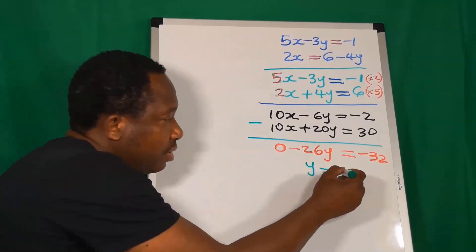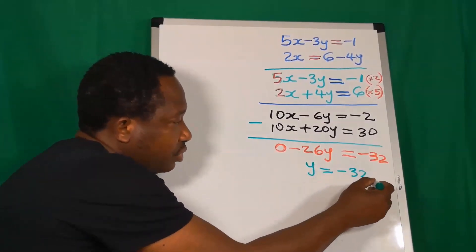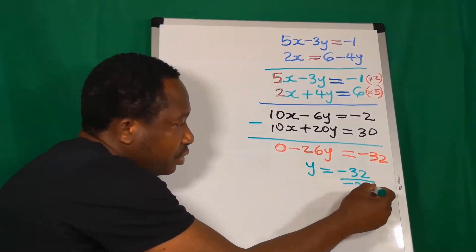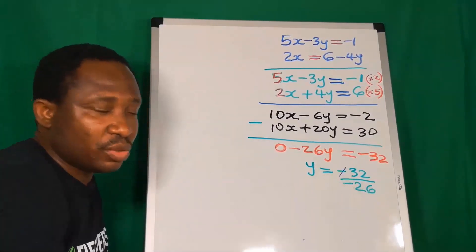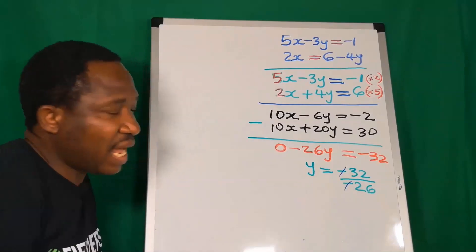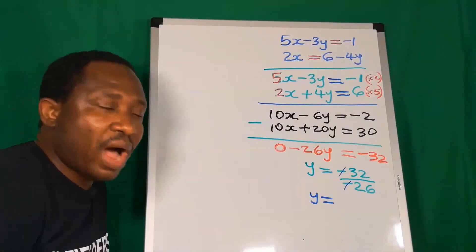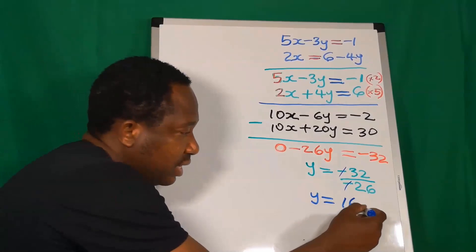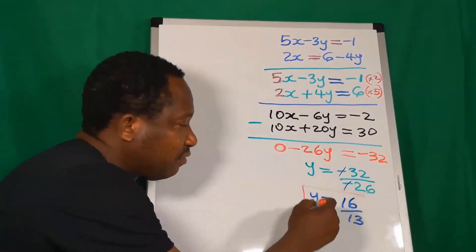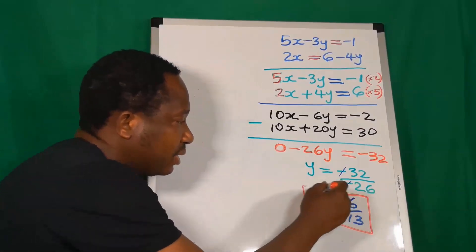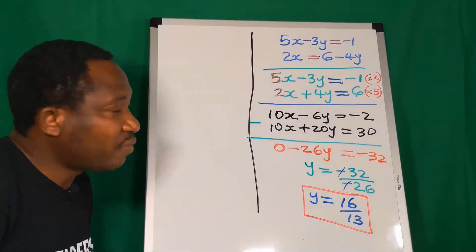Y is now minus 32 divided by minus 26. Minus at the numerator will cancel this minus at the denominator. Y is 16 over 13. Now we have obtained the value of y. Let's solve for x.